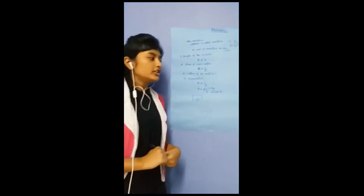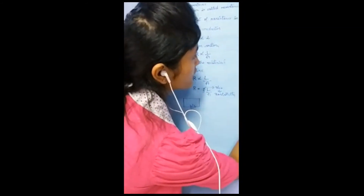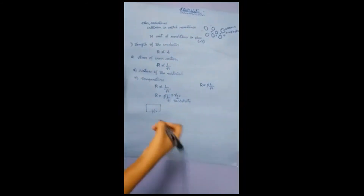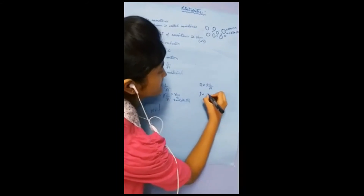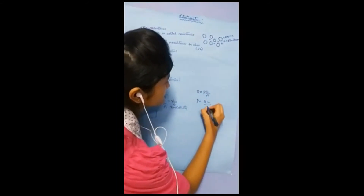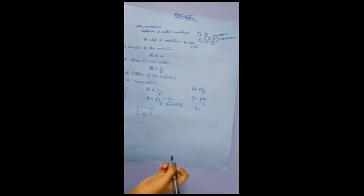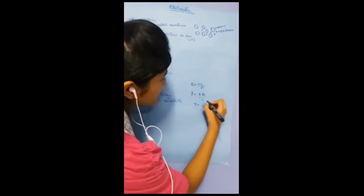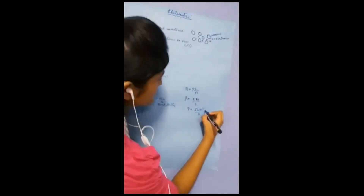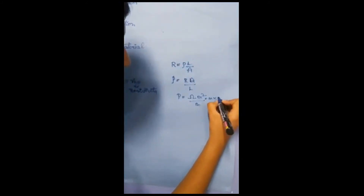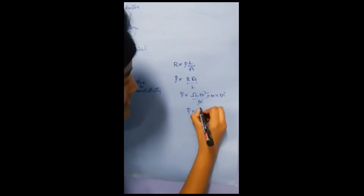Now let us derive the SI unit of resistivity. We know that R = ρL/A. We want the SI unit of rho, so we rearrange to get ρ = RA/L. The SI unit of resistance is ohm, area is meter squared, and length is meter. Meter squared is meter times meter, so one meter cancels with the meter in the denominator. Therefore, the SI unit of rho is ohm·meter (Ω·m).